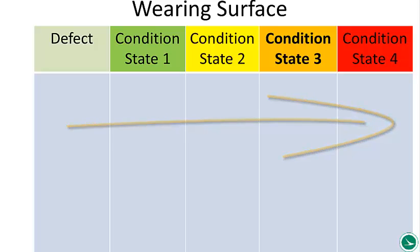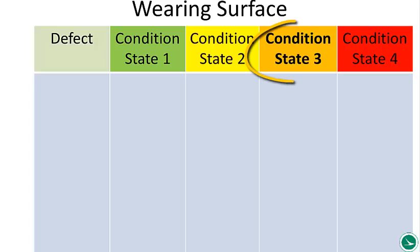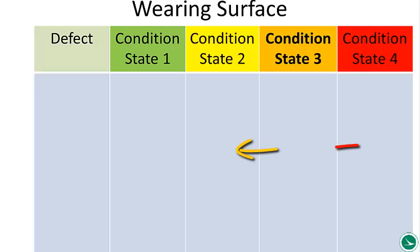I've bolded condition state 3 because that's where I'm going to begin discussing defects. Usually if there's distress on the wearing surface, there's a defect. A good place to begin is placing it at least temporarily in state 3 and determining if it should scatter to 2 or if it should scatter to 4 — so either side. State 3 is a good place to begin.